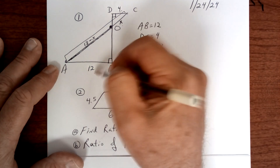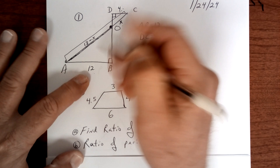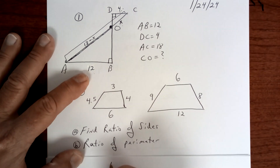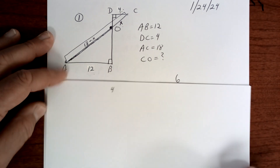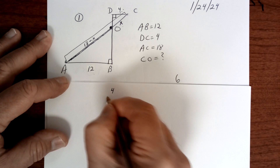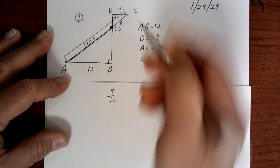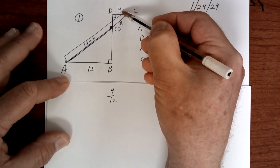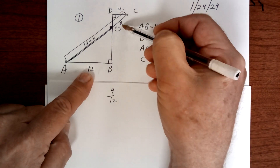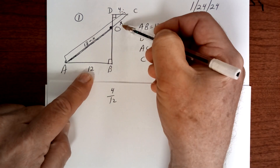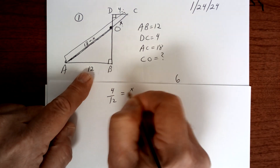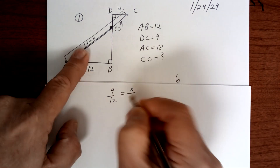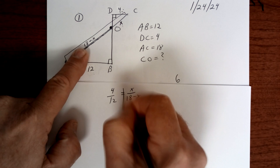So I'm going to say 4 over 12 — flat over flat. And then I'm going to do diagonal or hypotenuse over hypotenuse. And that should work.